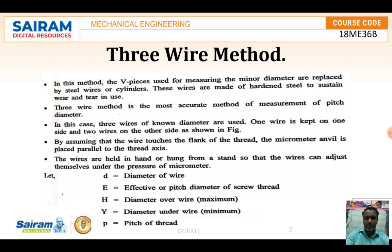The gauge pieces used for measuring the minor diameter are replaced by steel wires or cylinders. These wires are made of hardened steel and can sustain wear and tear. The 3-wire method is the most accurate method for measurement of pitch diameter. The 3 wires of known diameter are used — one wire is kept on one side and the other 2 wires are kept on the other side. By assuming the wire touches the flank of the thread, the micrometer anvil will be placed parallel to the thread axis.